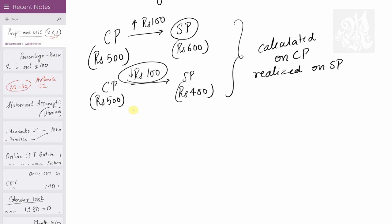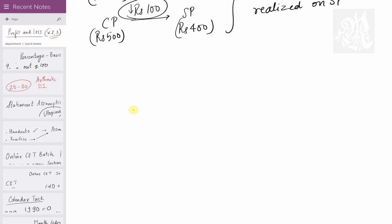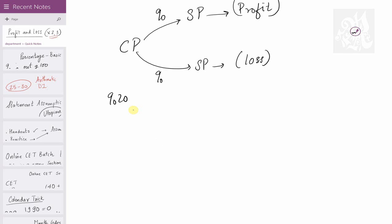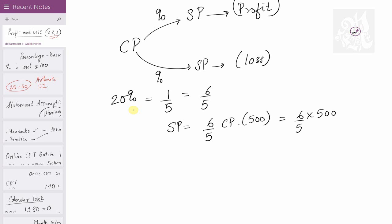If you've followed my percentage lectures, you'll recall multipliers — where we increase or decrease something. When cost price is increased by a percentage to obtain a selling price, it's a profit transaction. For example, if cost price is increased by 20% — that's 1/5 — it becomes 6/5. So selling price = (6/5) × cost price. For CP of Rs. 500, selling price = 6/5 × 500 = Rs. 600.